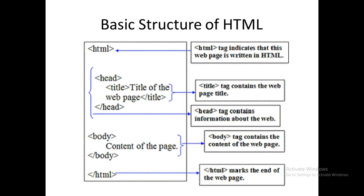Basic structure of HTML: for writing code, we use tags in HTML language. Tags are the words which are always in between less-than and greater-than symbols, and most of them end with a closing tag. Our HTML document starts with the HTML tag and ends with slash HTML. We have two main parts in an HTML document: the head tag and the body tag.